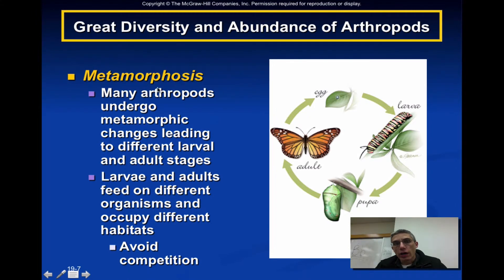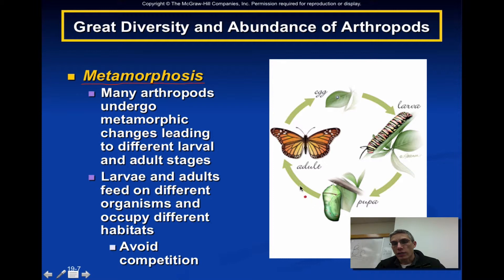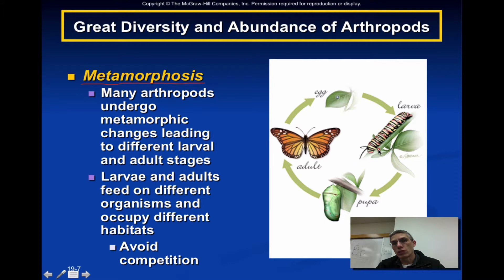When looking at the life cycle of an arthropod, the term metamorphosis is often used — 'morph' basically means to change. A caterpillar compared to a butterfly is a classic example: the larval form is very different from the adult. The main reason is to ensure there's no competition between larvae and adults — larvae and adults feed on different organisms and occupy very different habitats.